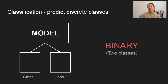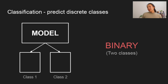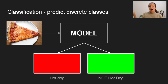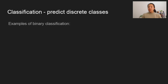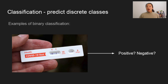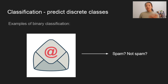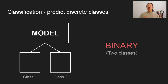There's also binary classification, which means we only have two classes and we're just trying to determine which one it fits in. One example is hot dog versus not hot dog. Other examples of binary classification might be: am I positive or negative for COVID? Does this image contain a cat or a dog? Or is this email spam or not spam? In all of these, there are only two categories — it's one or the other — and we want our model to tell us which.